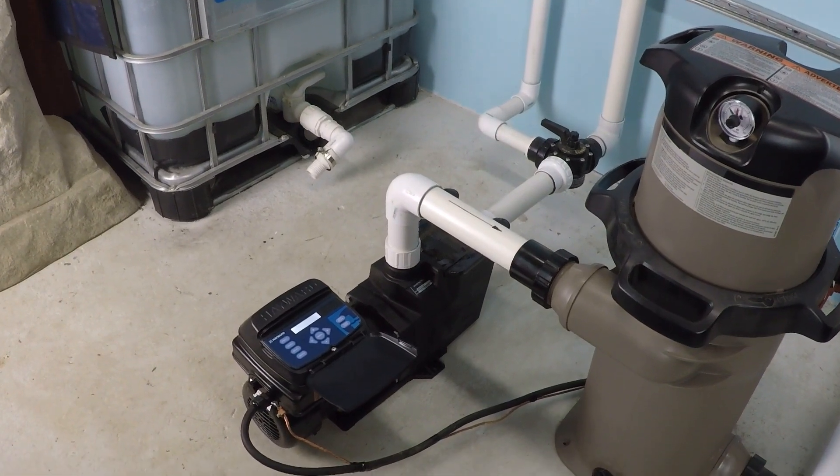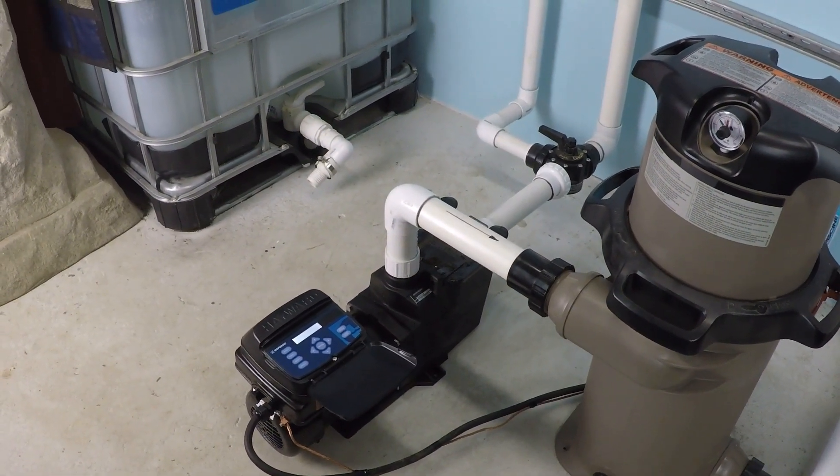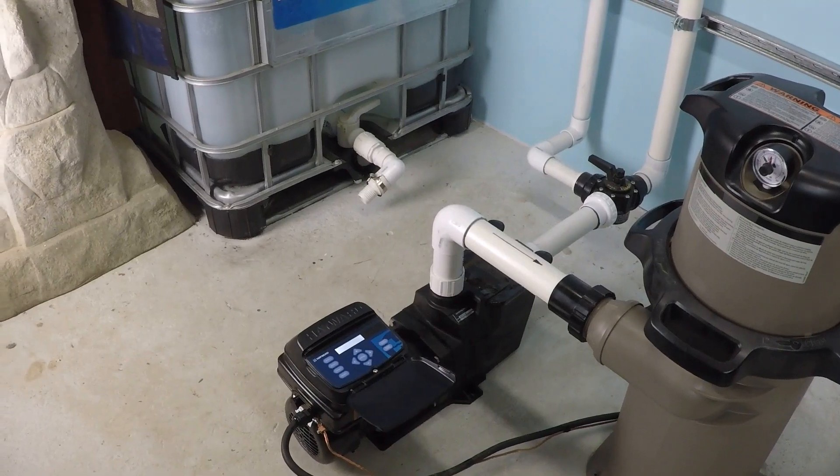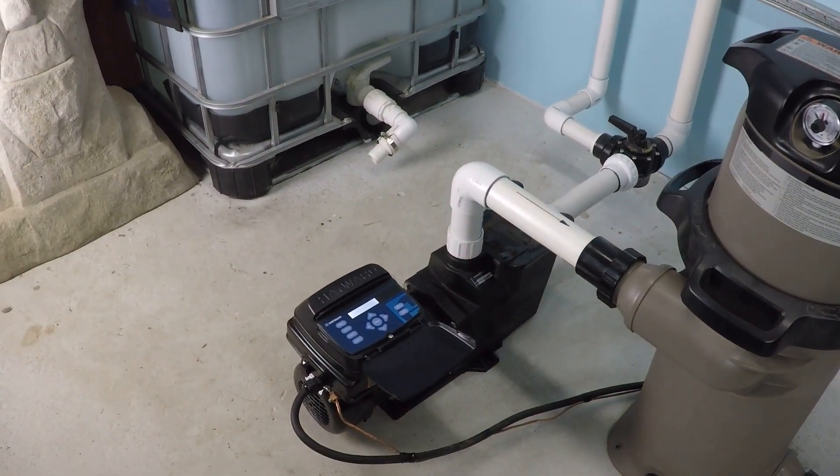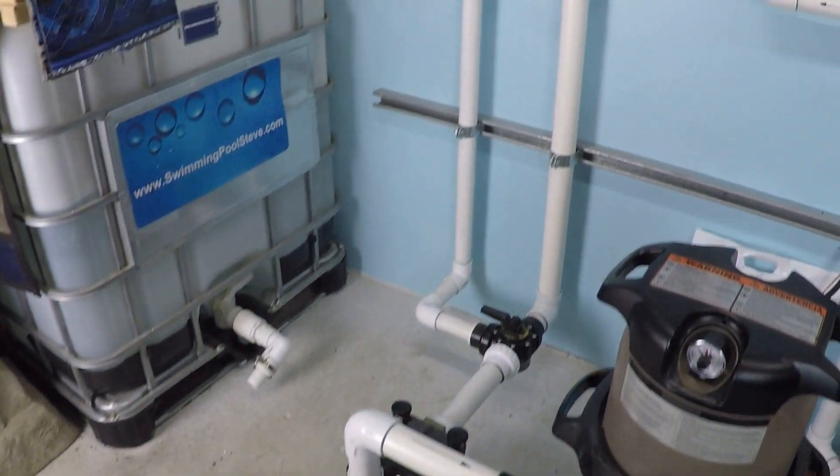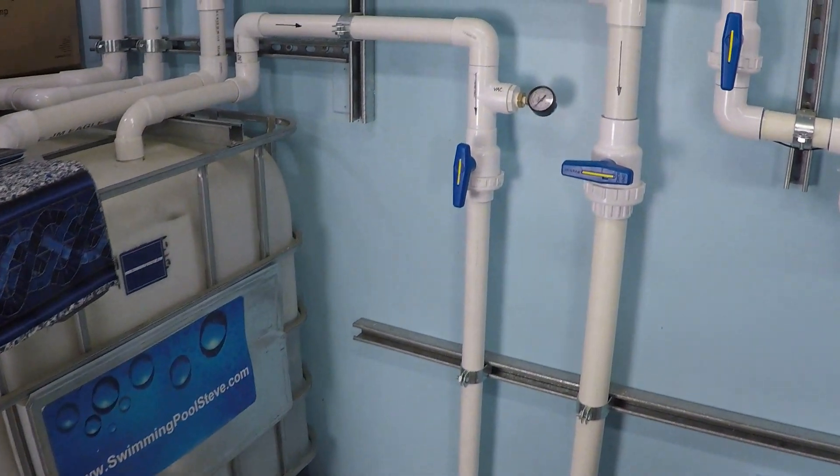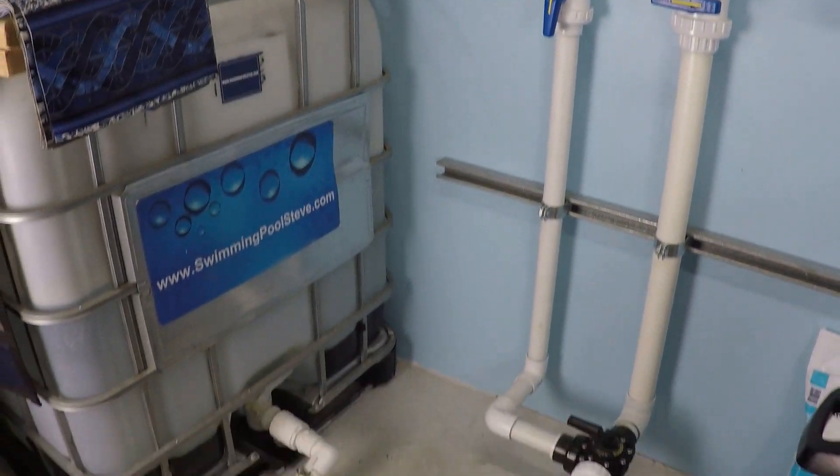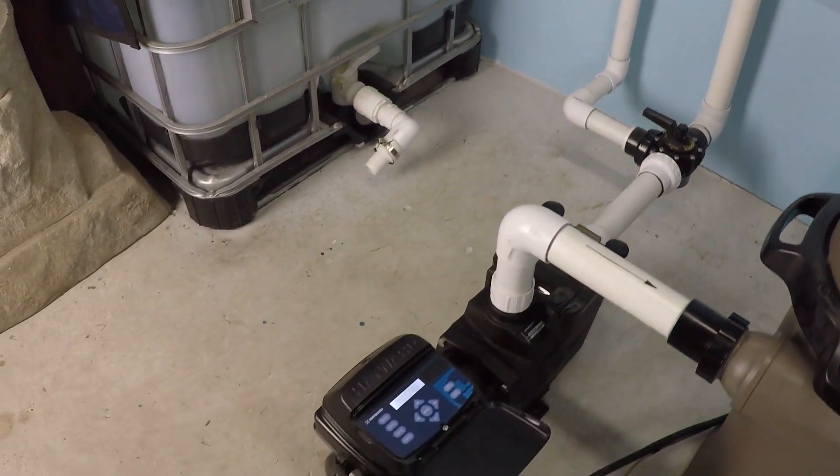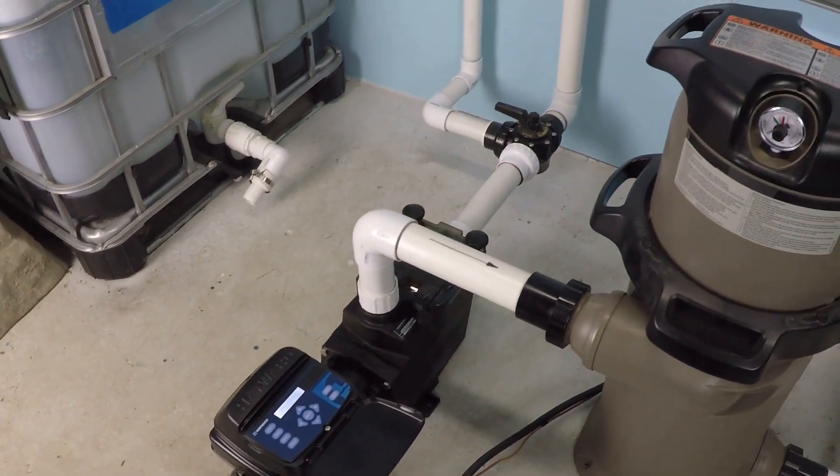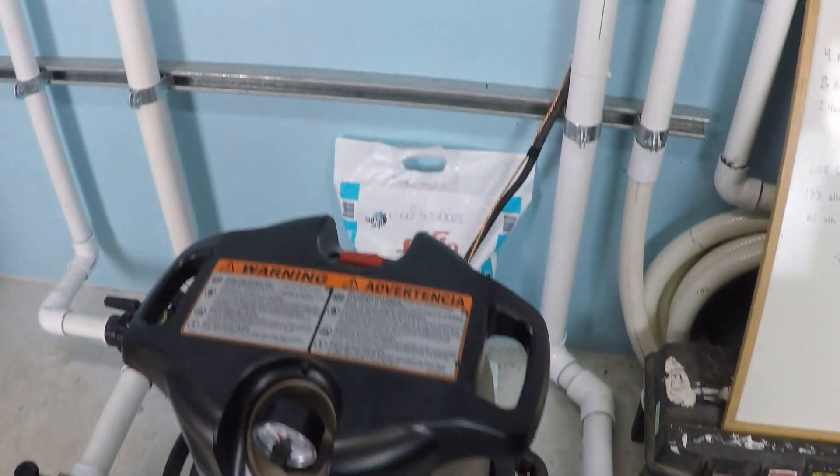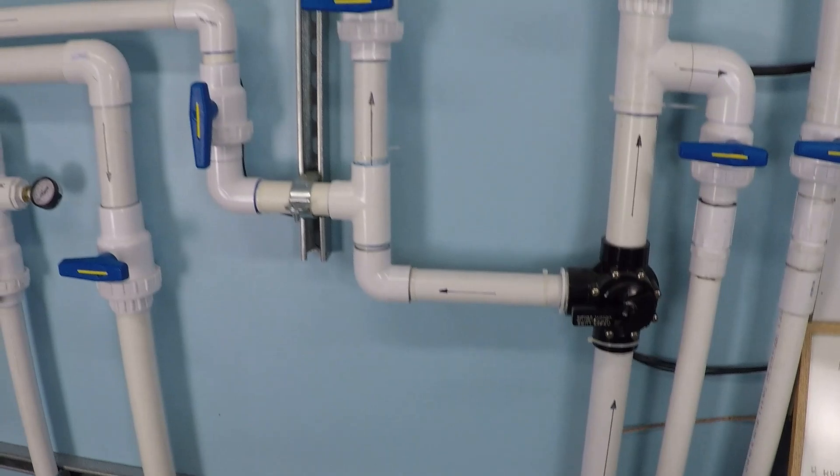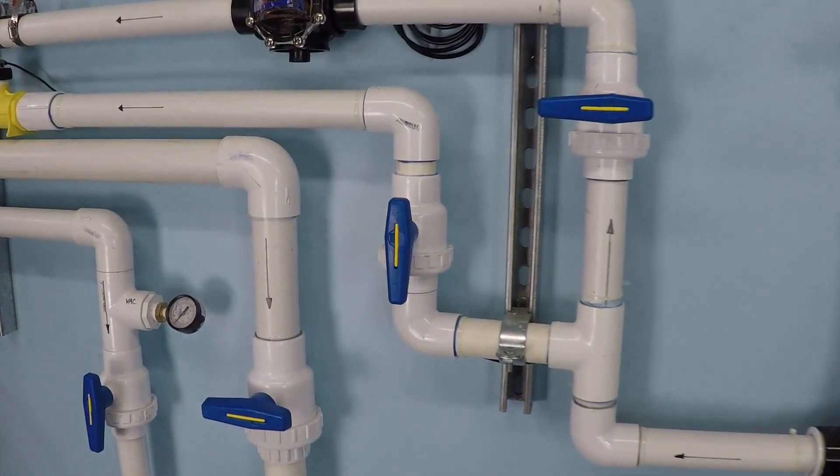So the pump that we're working with is the Hayward Super Pump Variable Speed SP2603 VSP, 230 volts for this electrical service. The plumbing system set up today is a single inch and a half section line through the pump and filter at two inch. The filter is 150 square feet cartridge filter, two inch discharge, and then we isolate back down into a single inch and a half return line.